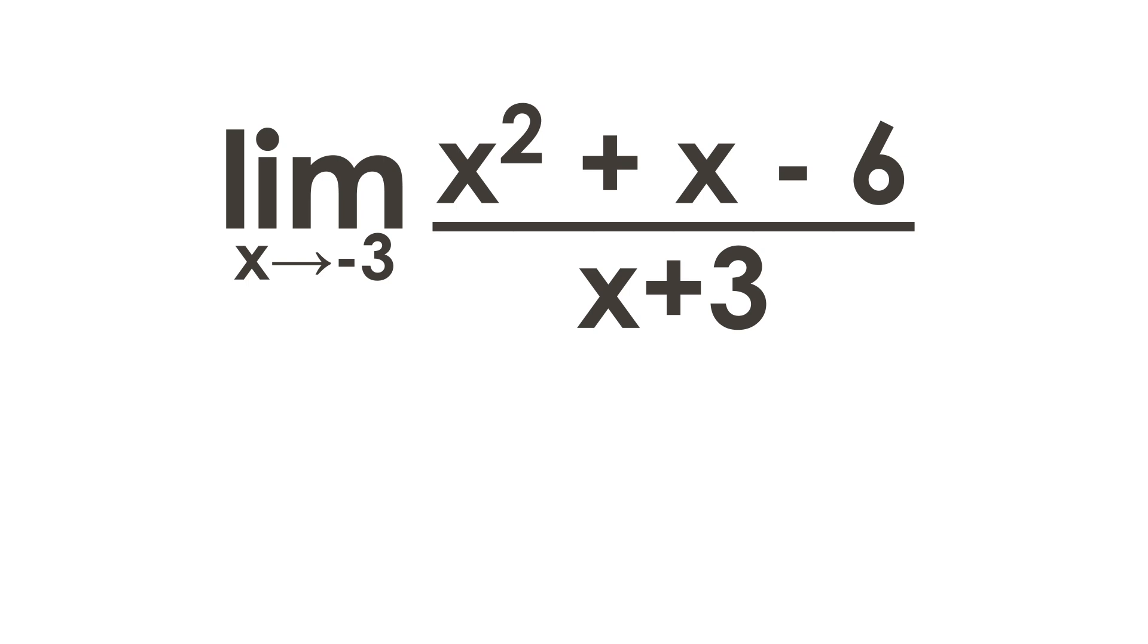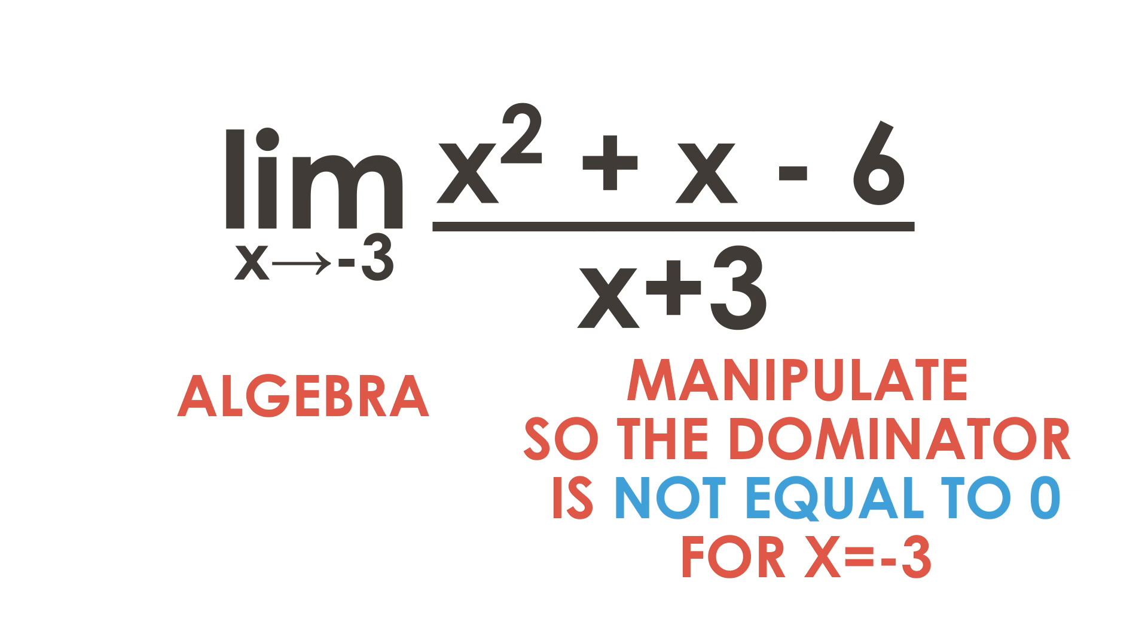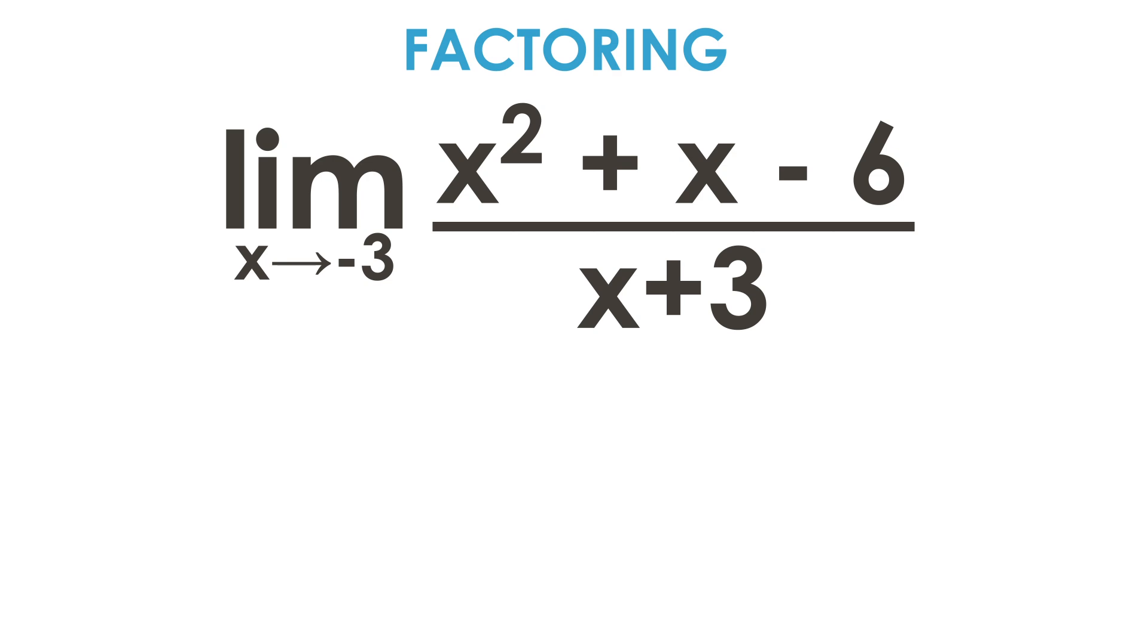So in order to solve this problem, we need to use some algebra. And we need to manipulate this problem in a way that the denominator is no longer equal to 0 when x is equal to negative 3. And we can do this quite easily by factoring.